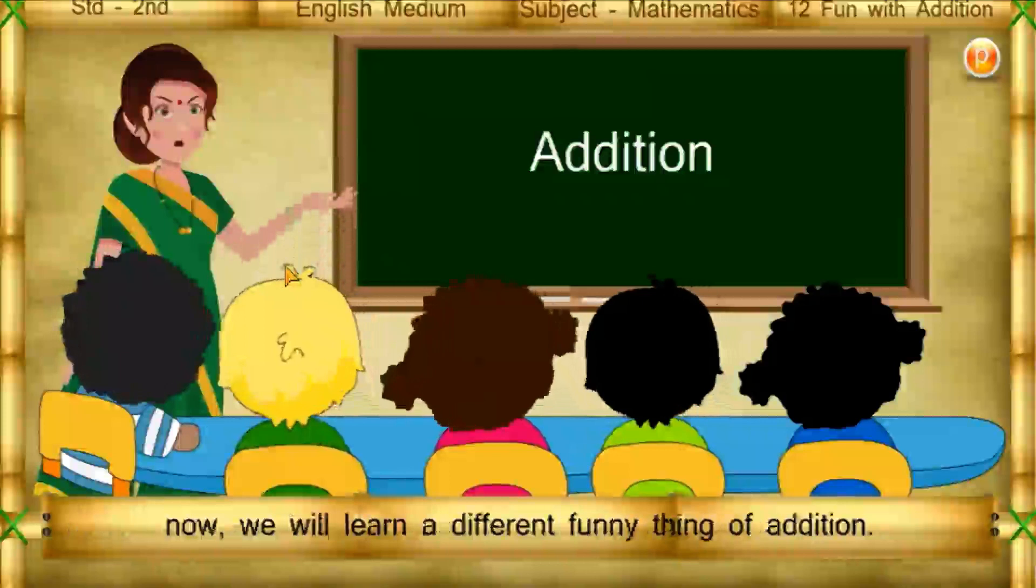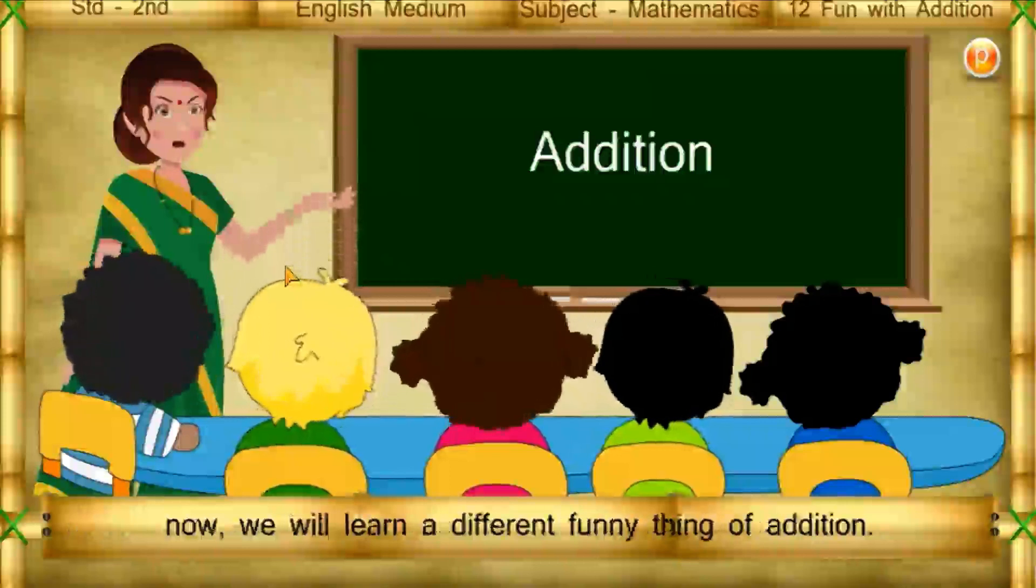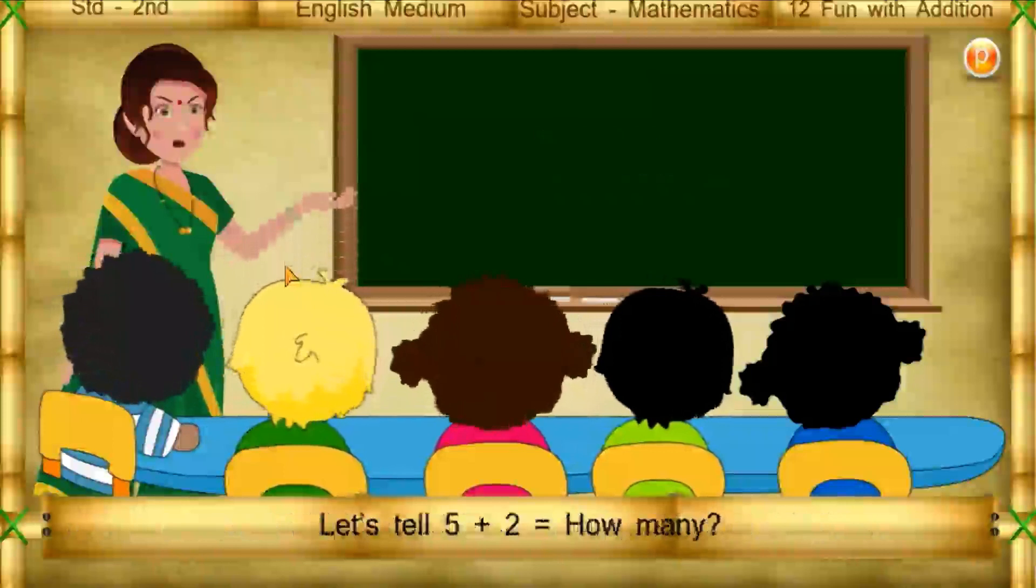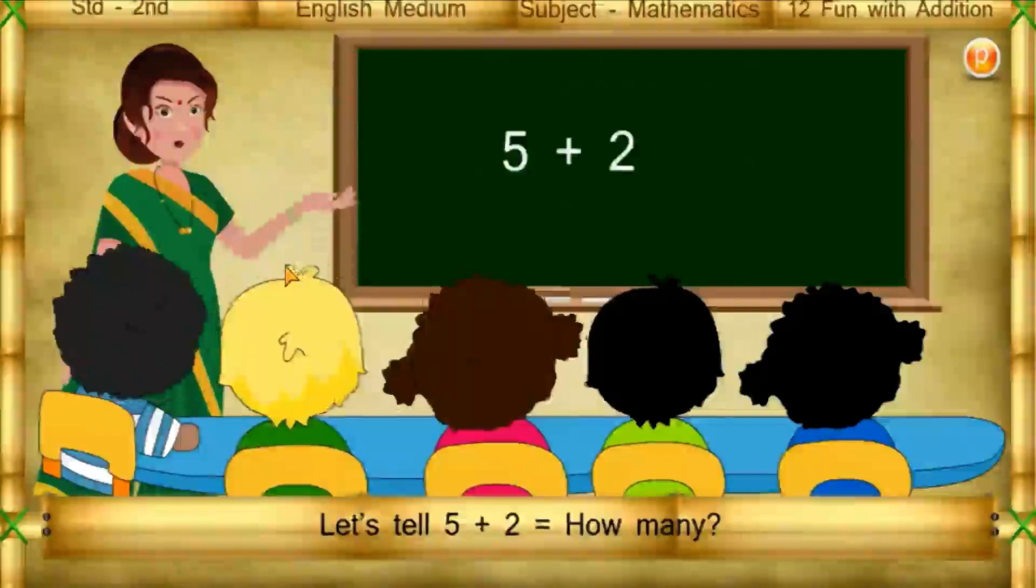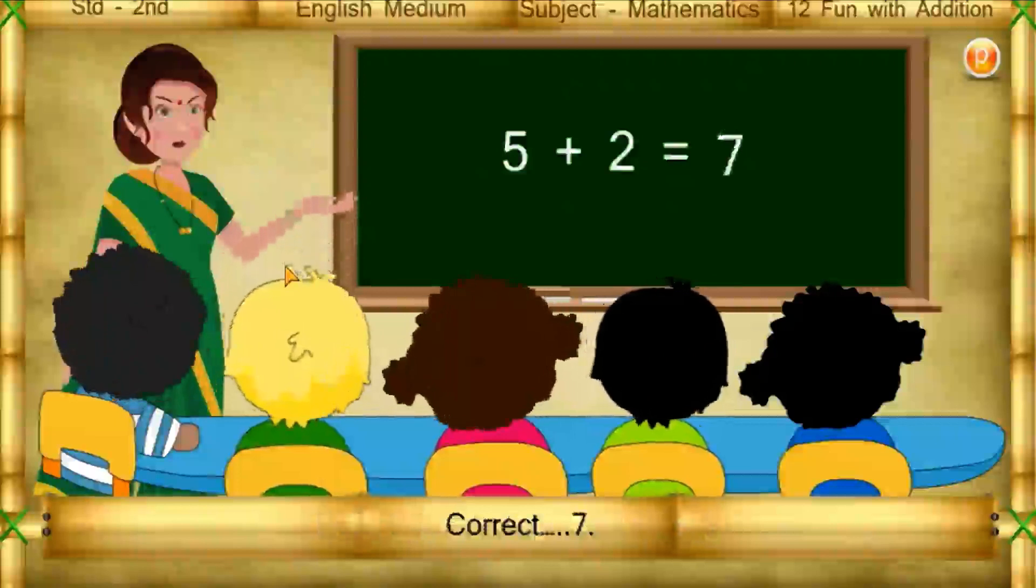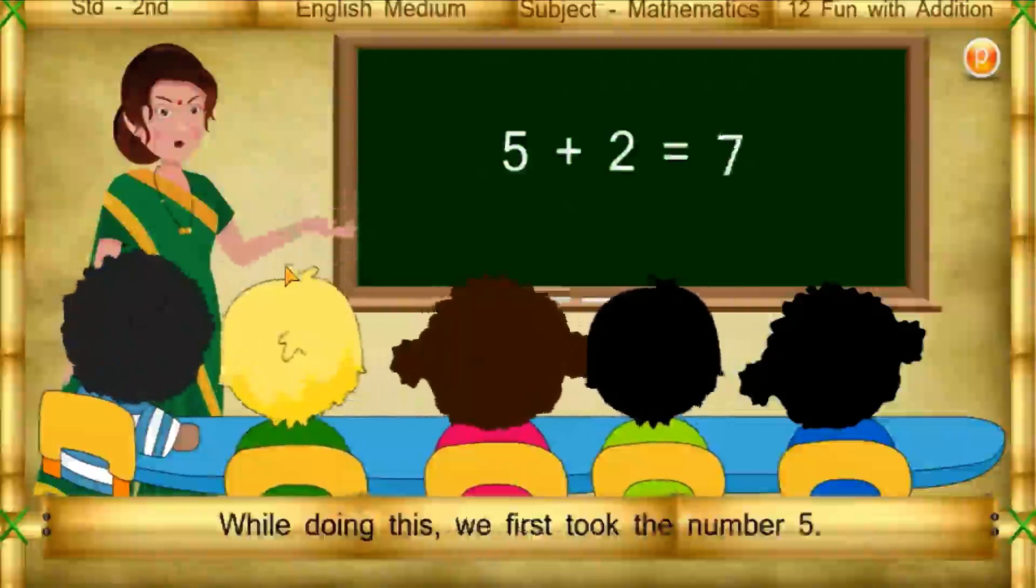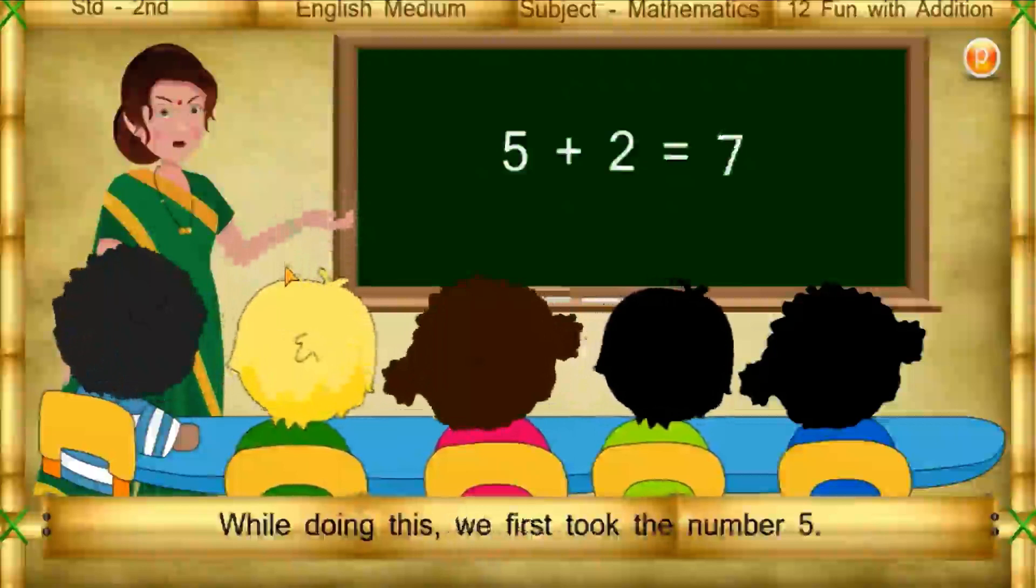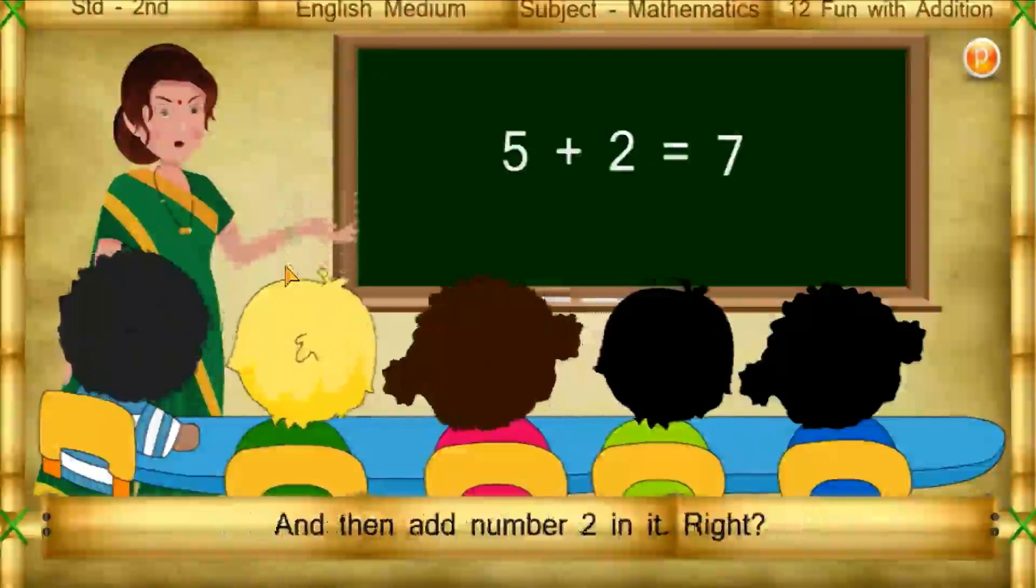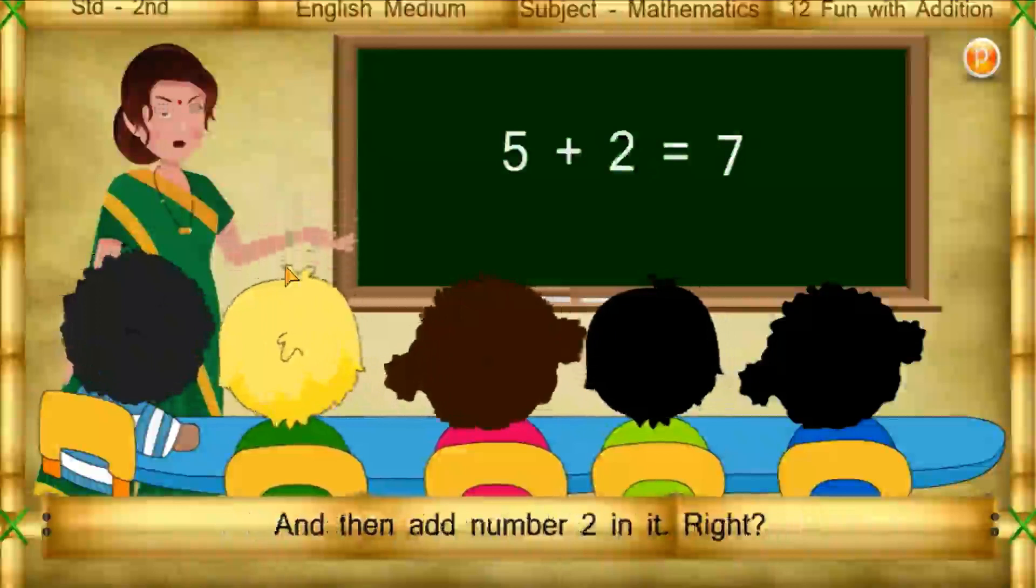Now we'll learn a different funny thing of addition. Let's tell, 5 plus 2 is equal to how many? Correct, 7. While doing this, we first look at the number 5 and then add number 2 in it. Right?